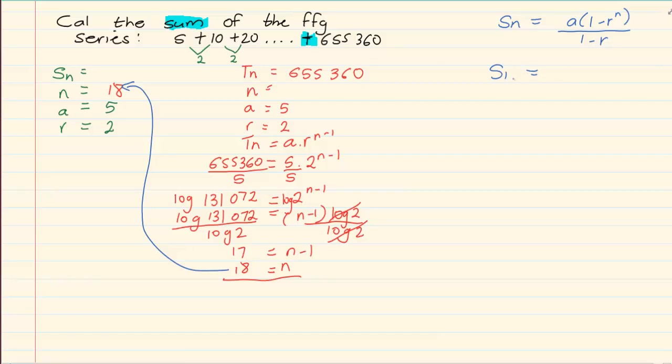Substitute what we have. We don't have SN, but we have A is 5, 1 minus R is 2, to the power of 18, all over 1 minus 2. Using your calculator, you will find that SN is equal to 1,310,750.